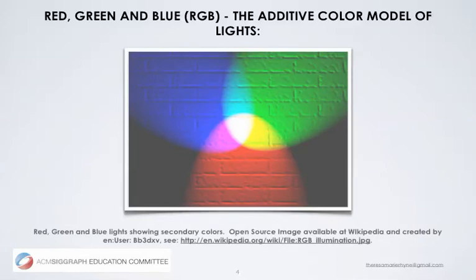As we look in the center of this diagram, we see red, green, and blue coming together to form white light. If we look a little bit closer, we see there's also cyan, magenta, and yellow. Notice there is a reciprocal relationship with the red, green, and blue additive color model of lights and the cyan, magenta, and yellow subtractive color model for printing.